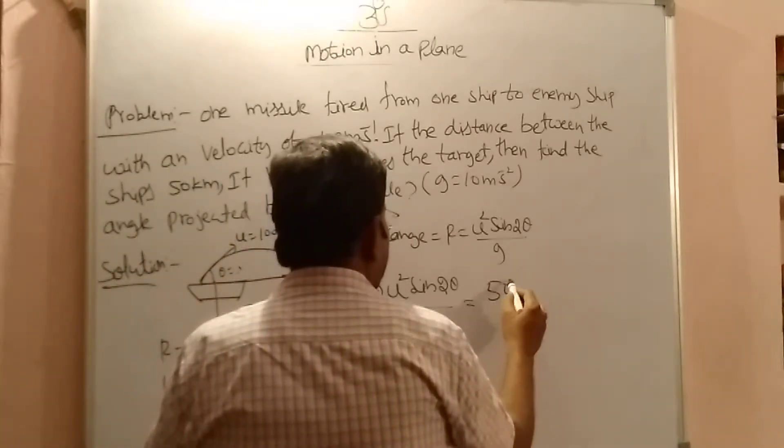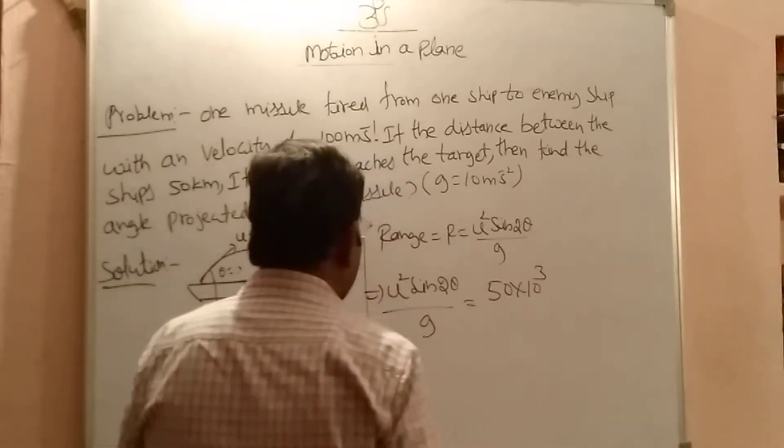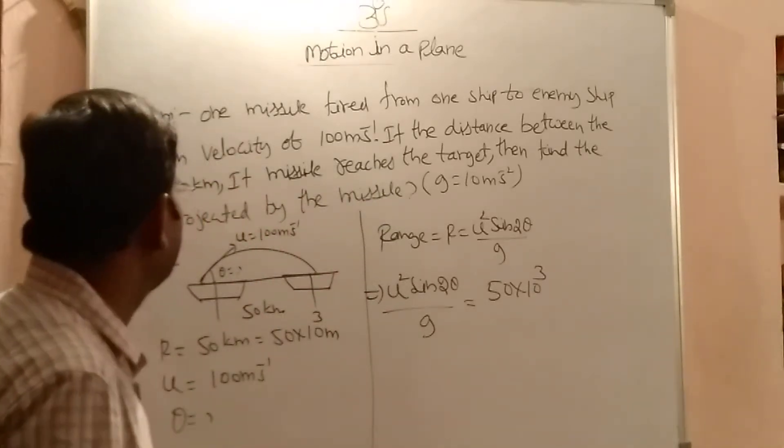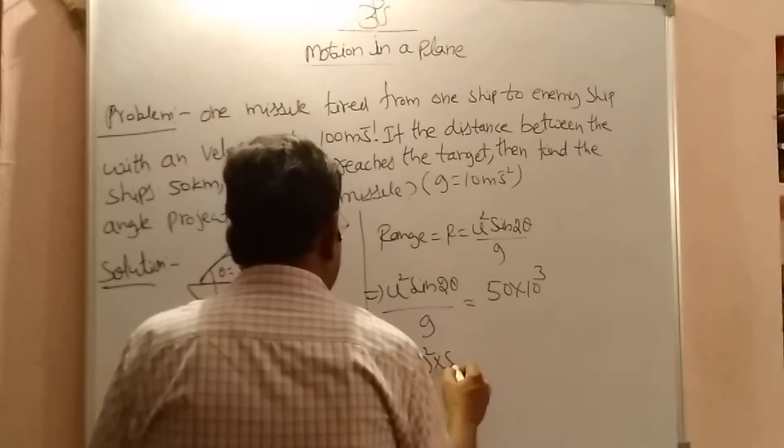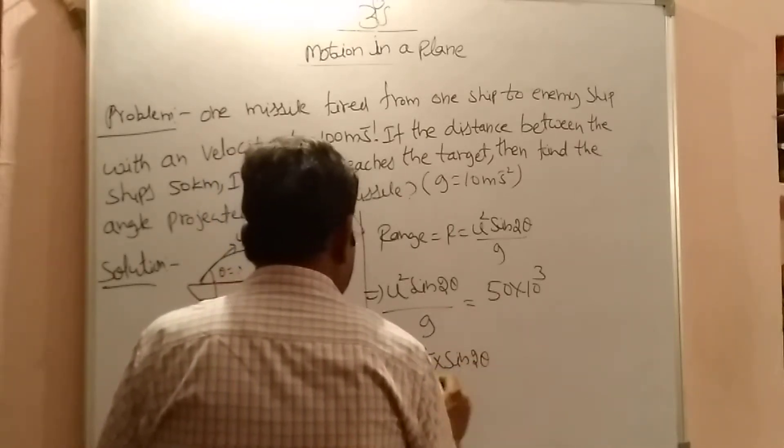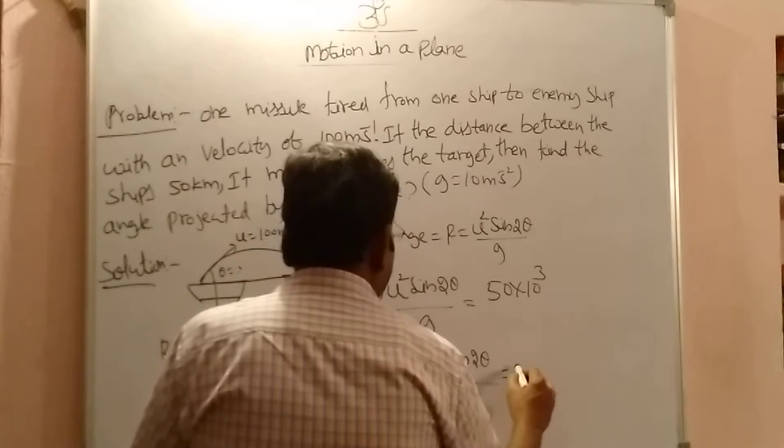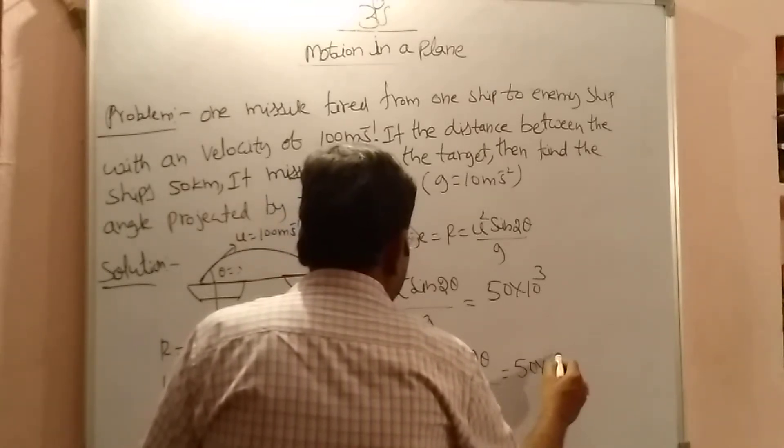What is the range? 50 into 10 power 3. Now what is the u value? U equal to 100. So 100 square into sin 2 theta by 10. That is equal to 50 into 10 power 3.